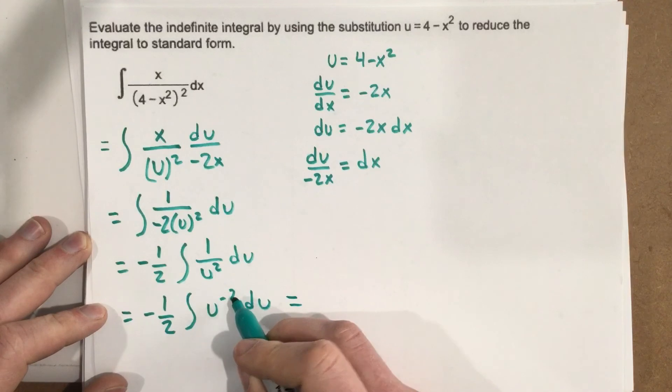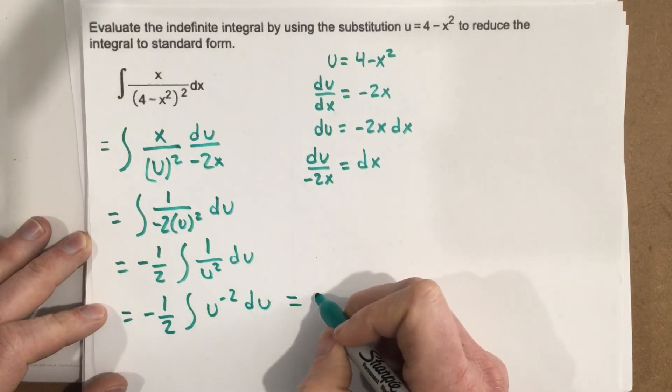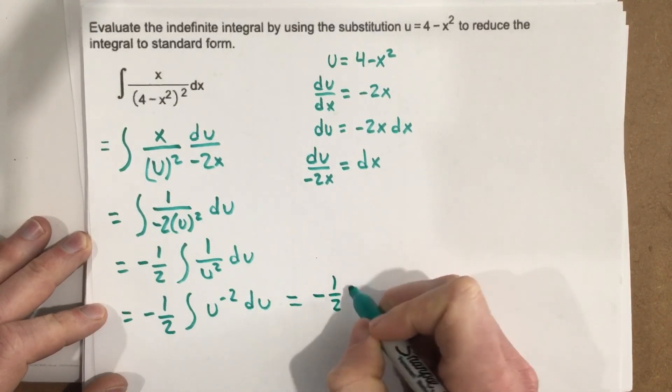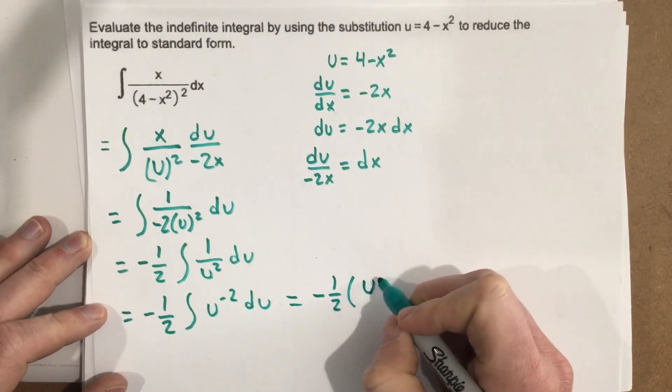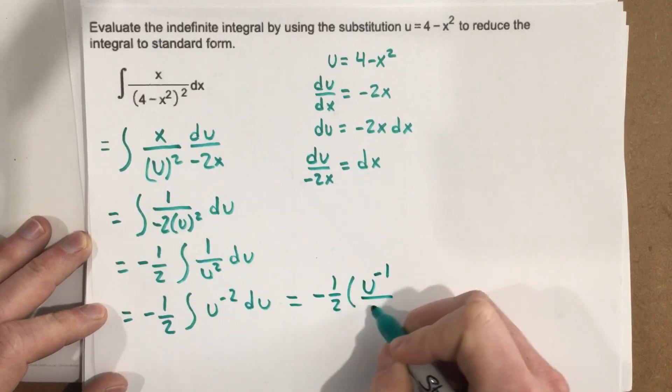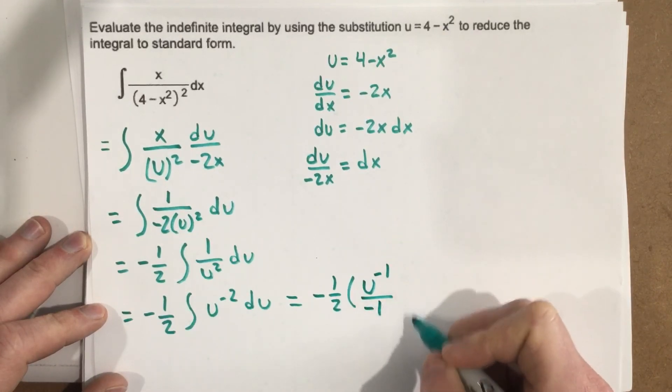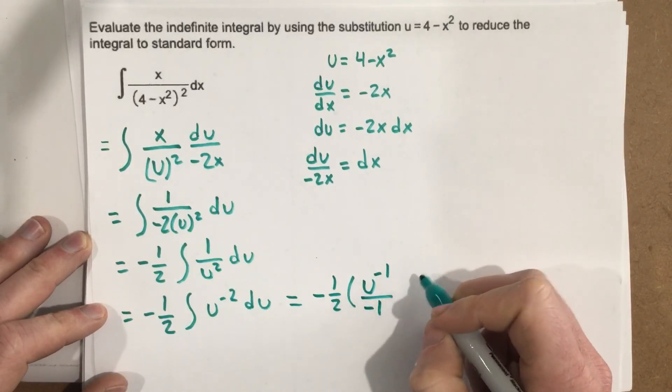Add 1 to this and divide by it. So we end up with negative 1 half times, that would be u, when you add 1 to the negative 2 you get negative 1, over negative 1. And then you would have plus c.